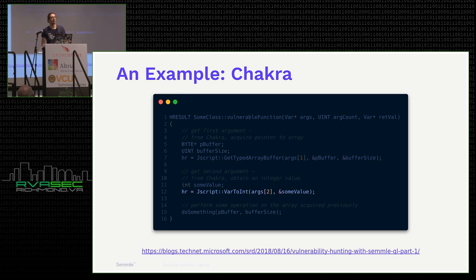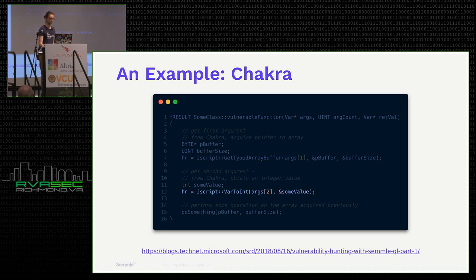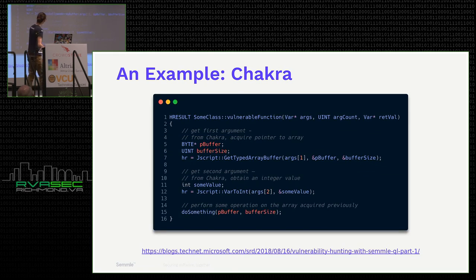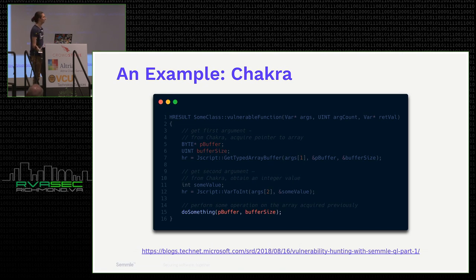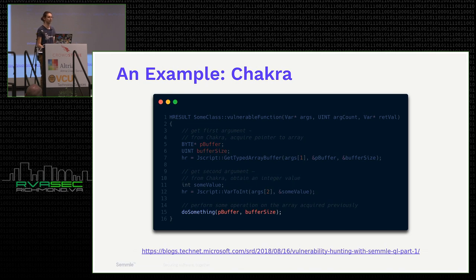For example, in that overwritten valueOf method, you could decide to free the array buffer so that pbuffer becomes a dangling pointer. Then when you try and use the pointer, you have a memory corruption issue. When Microsoft were assessing this vulnerability, they decided it was critical — they pretty easily created an exploit that managed to crash the browser, and suspected it wouldn't take much more effort to create a full code execution exploit.